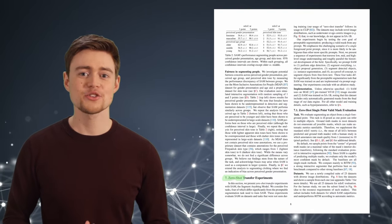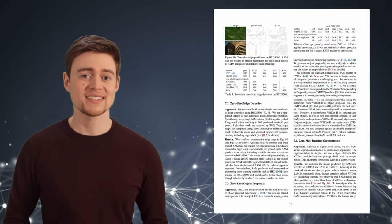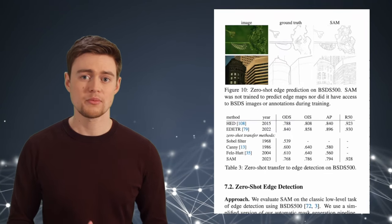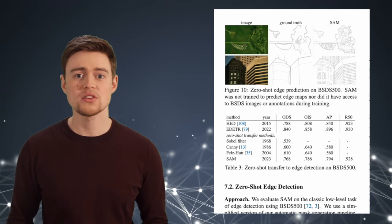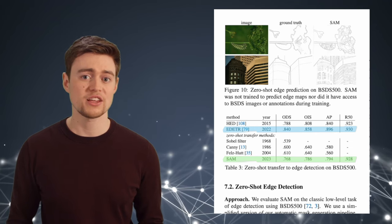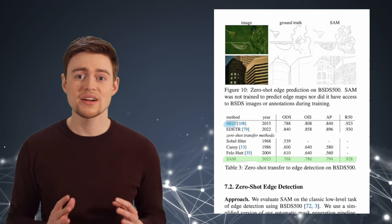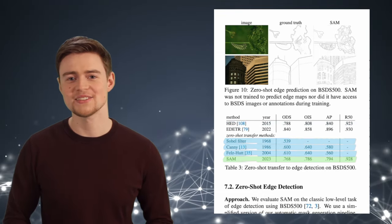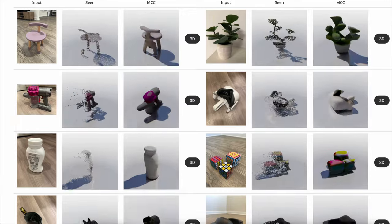The authors evaluated SAM's zero-shot capabilities on several tasks. One of them is edge detection — you can see an example where SAM predicts very reasonable edges from an input image, even though it wasn't trained for edge detection. Of course, it performs worse than state-of-the-art models trained on edge detection datasets, but it compares well with other task-specific models and performs far better than other zero-shot techniques. Because of its zero-shot capabilities, SAM can be adapted to many interesting image processing tasks, such as MCC, which performs 3D reconstruction from images.